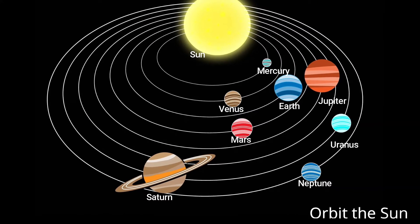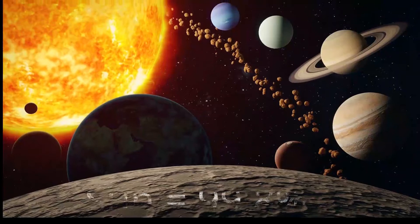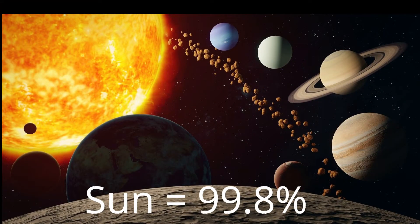All these eight planets orbit the Sun. The Sun contains around 99.8% of all the mass in the solar system.